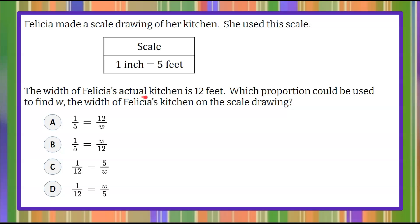The width of Felicia's actual kitchen is 12 feet. We're asked which proportion could be used to find W, the width of Felicia's kitchen on the scale drawing, and you're given four answer choices.